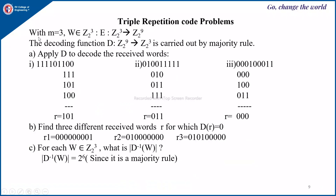Some more examples on the triple repetition code. Suppose m equals 3, then encryption transfers 3-bit data into 9 bits by copying 3 bits three times. The decoding function transfers 9 bits into 3 bits, carried out by the same majority rule. Applying the decoding function to received words: with 9 bits, you divide it into 3 parts — first 3 bits, second 3 bits, third 3 bits — and apply majority rule. For 1 1 1 the majority is 1; for 1 0 0 the majority is 0; for 1 1 1 the majority is 1. Here 2-bit errors are present but correctly decoded.